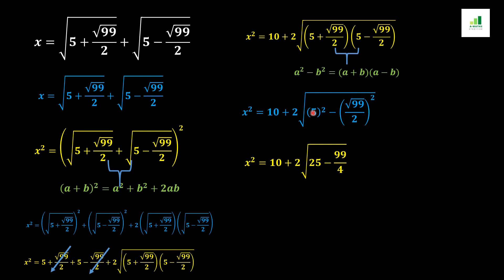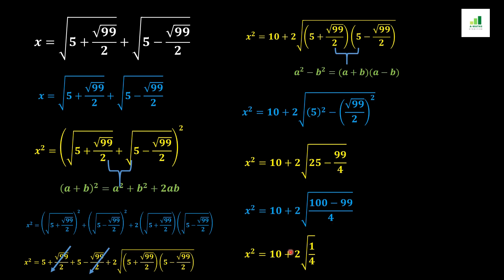Simplifying: x² + 10 + 2 remains. Squaring 5 gives 25, and squaring √99/2 gives 99/4. Multiplying 25 by 4 gives 100, so we have (100 − 99)/4 under the root, which equals 1/4. This comes out of the root as 1/2, and then the 2 and 2 cancel out.